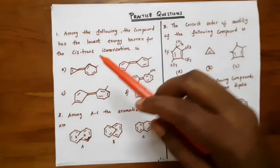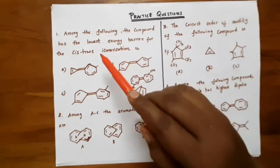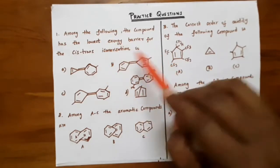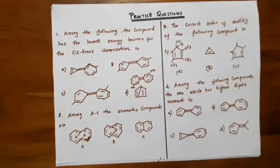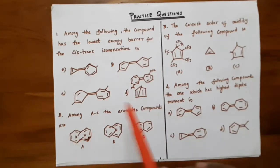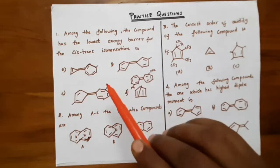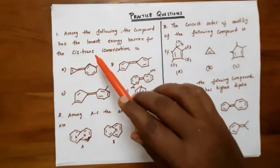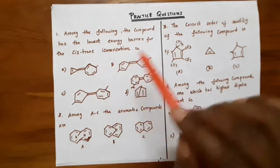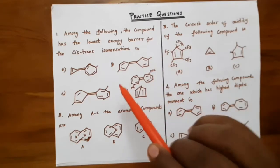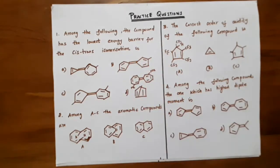The first question: among the following compounds, which compound has the lowest energy barrier for cis-trans isomerization? All the questions are mainly based on aromaticity. First, read the question carefully — it is asking for the lowest energy barrier, the compound which has the lowest energy barrier. For this we have to use aromaticity.